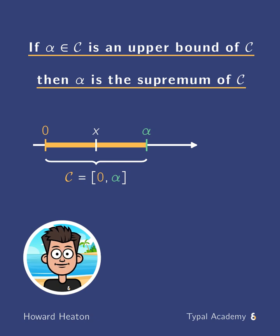The key intuition here is shown by the following diagram. For simplicity, suppose we are working with C as a closed interval from 0 to alpha.